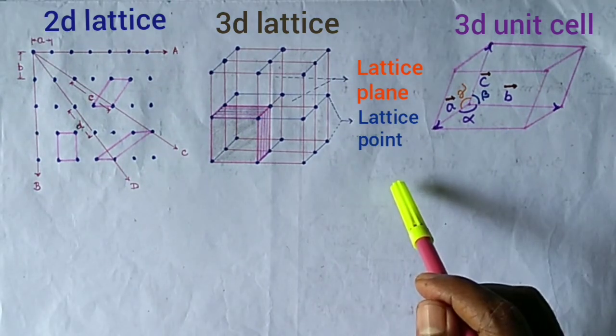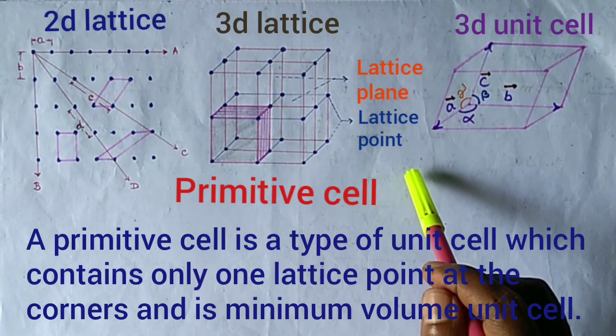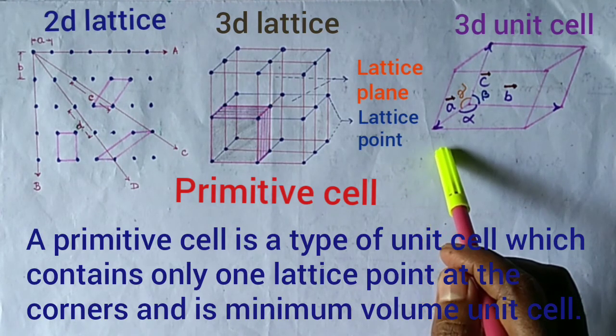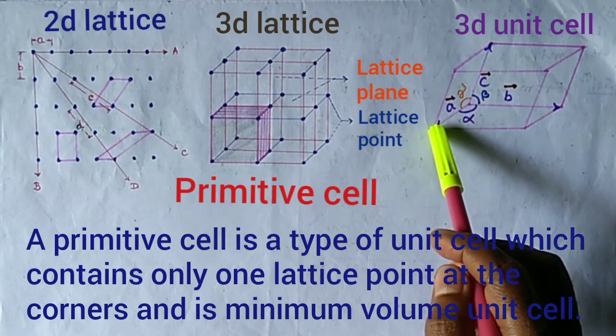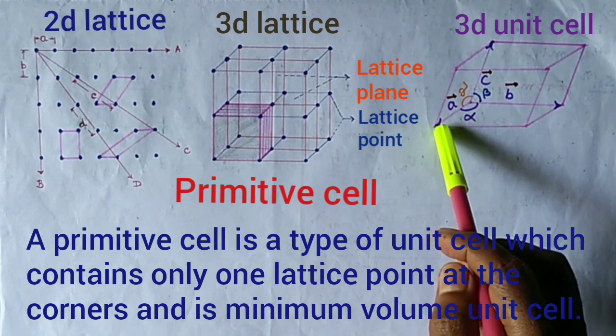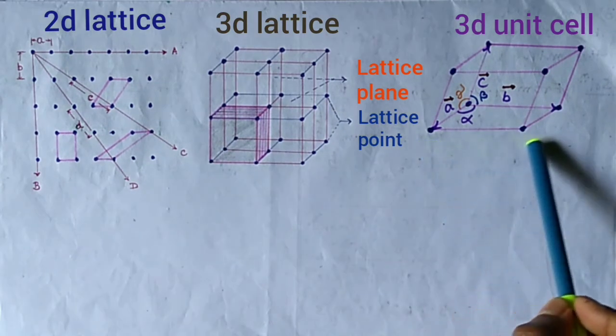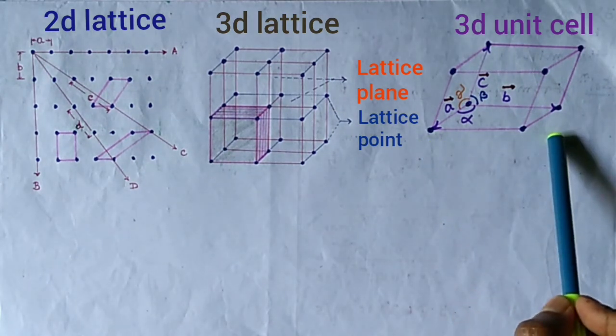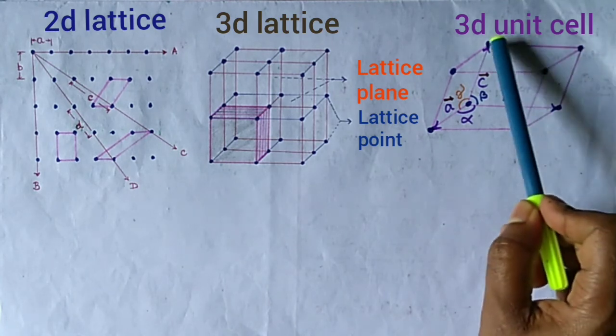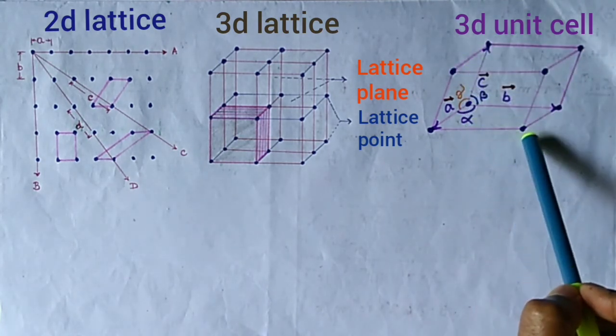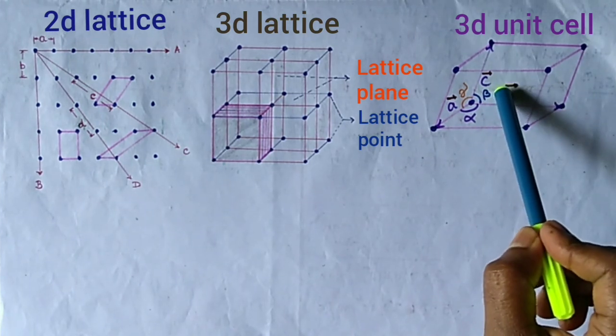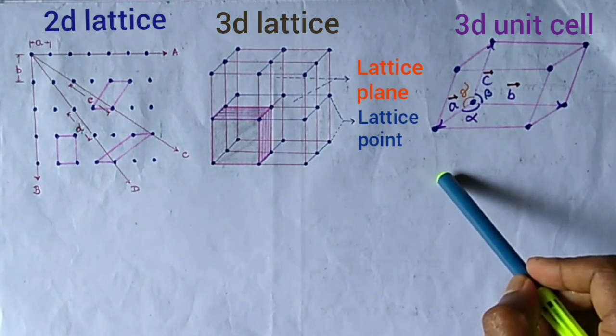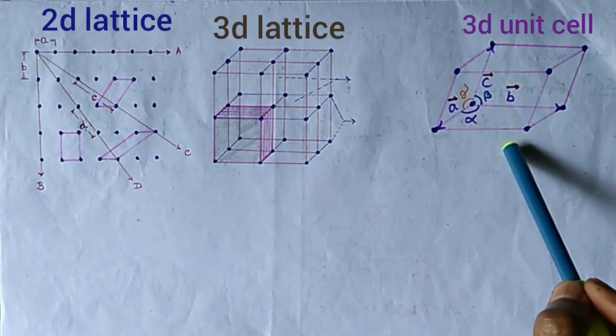Now, we define a primitive cell. A primitive cell is a type of unit cell which contains only one lattice point at the corners and is minimum volume unit cell. This is also a primitive cell. Look, each corner contains a lattice point. If we place a lattice point inside the unit cell, the unit cell is not called the primitive cell. So, it is not necessary that the unit cell should be equal to the primitive cell.